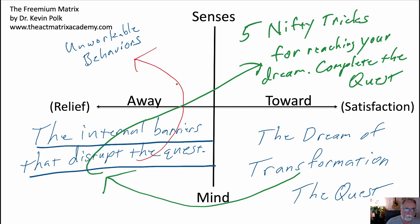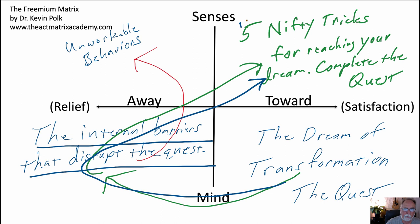What you can do as a freemium is address that a little bit. Notice the loop as it goes to the green — I'm following the green — and then it goes up here. We have a name I just came up with: 'Five nifty tricks for reaching your dream.' That ends there. So what you're doing is basically saying, here's five nifty things, tricks — tricks are a nice word — and freemiums to complete your quest.